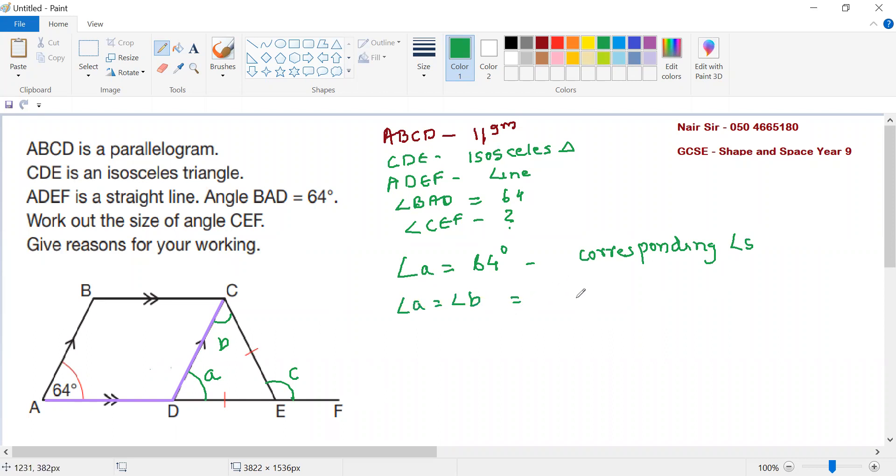CDE is an isosceles triangle. Angle C equals angle A plus angle B by the exterior angle theorem. Therefore angle C equals 64 plus 64, and the answer is 128 degrees.